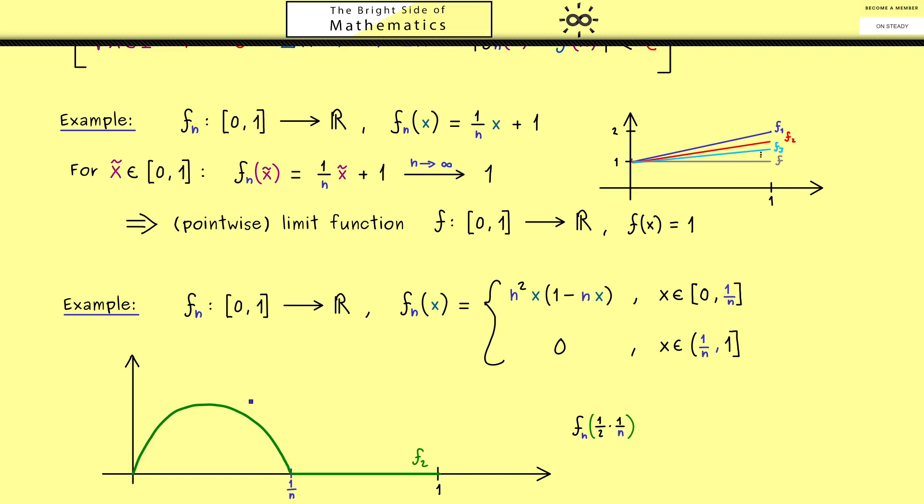Please note that we also know that the maximum value here lies at the point 1/(2n). Therefore we can immediately calculate this value. Let's put this point into the function and then you see we can cancel out a lot of n's. So what we get is n/4. This means that the maximum here increases with n. Hence the next function in our sequence would look like this. Obviously the region where it is 0 is larger, but the peak of the function is also higher.